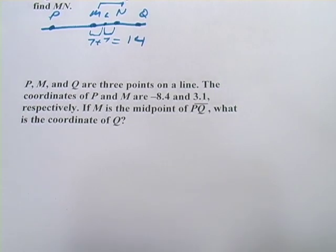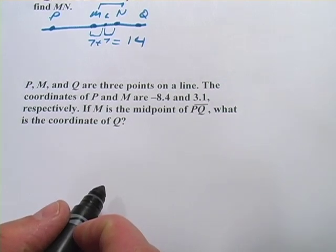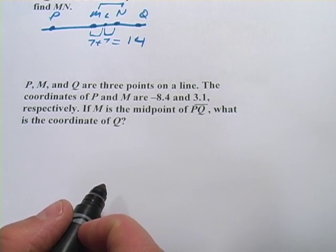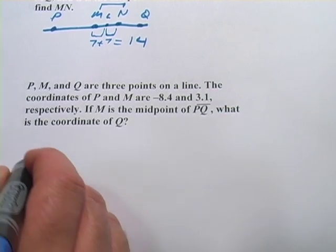This one says P, M, and Q are three points on a line. The coordinates of P and M are negative 8.4 and 3.1 respectively. If M is the midpoint of PQ, what is the coordinate of Q? And again, I would recommend drawing a picture.